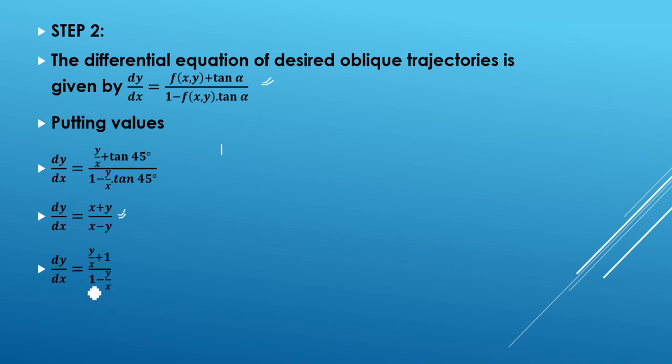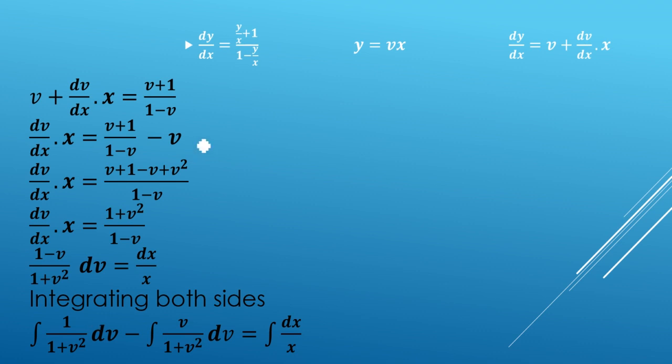So now we will solve tan 45, which is 1. So now this will be (y/x + 1)/(1 - y/x). Now we will solve it. We will solve it normally like we will solve homogeneous functions, but just to clear it, what we have done is that I have opened it.